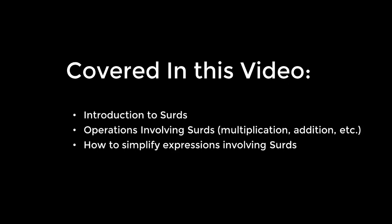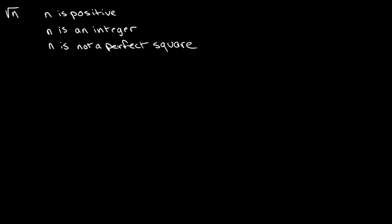In this video I will be going over the definition of a surd as well as the different operations that can be performed involving them. A surd is any number written in the form of the square root of n, where n is positive, is an integer, and n is not a perfect square.